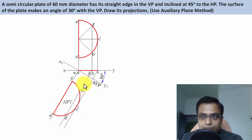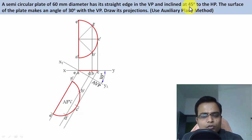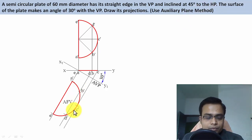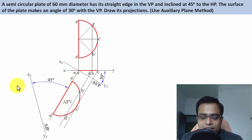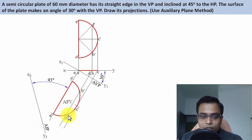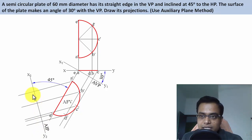Now in the final step we go for edge inclination — the edge makes an angle of 45 degrees with the HP. In the auxiliary planes method, instead of rotating this to 45 degrees, we introduce an auxiliary inclined plane at an angle of 45 degrees with respect to this edge. That's the auxiliary inclined plane from which we'll obtain the auxiliary top view. Draw perpendicular lines from all these points so that they intersect this plane at 90 degrees.